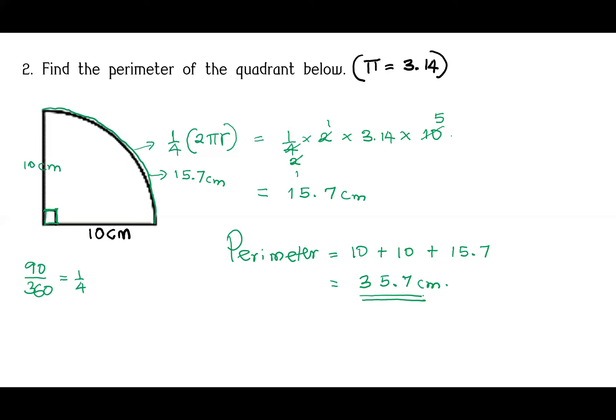So like a quadrant — a quarter of a circle — get the circumference of the whole circle divided by 4 to get the length of this arc. If it is a semicircle, get the circumference of the whole circle and divide it by 2.